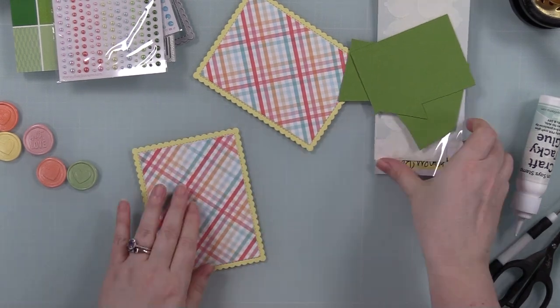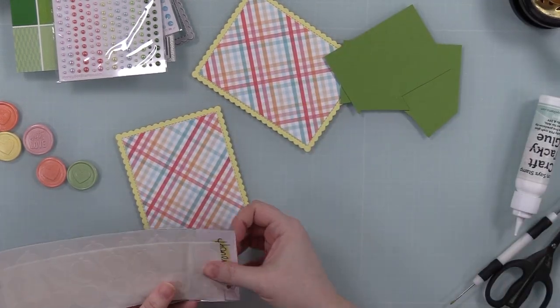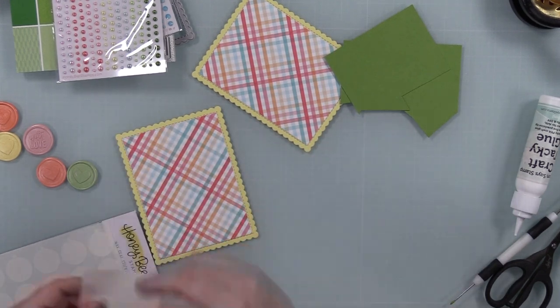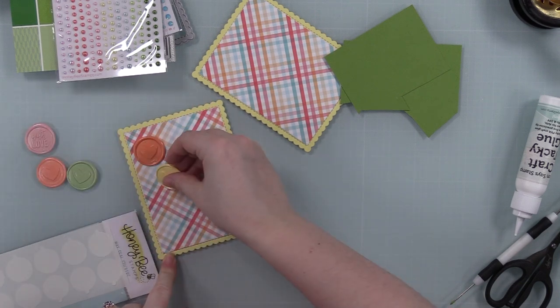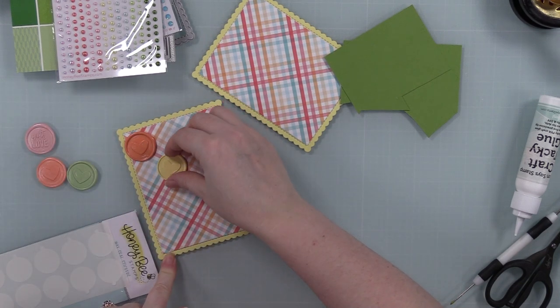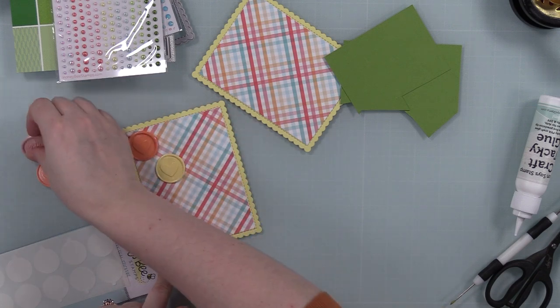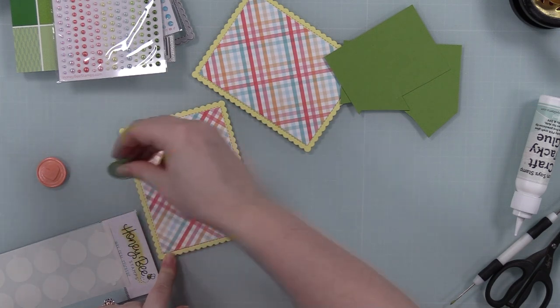But the pattern here was also what kind of inspired the card too, because this is the Happy Hearts pattern paper, so it went with the wax melts. So I cut down a couple rectangles of one of the pattern papers and adhered that to the scalloped rectangle.